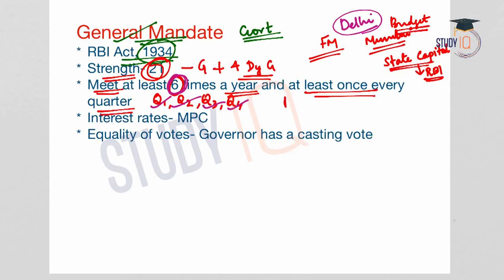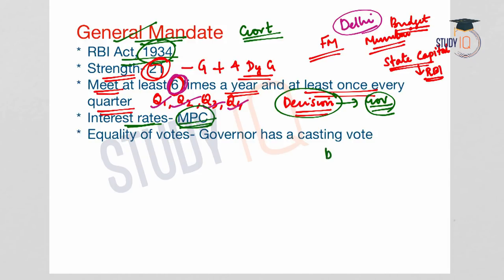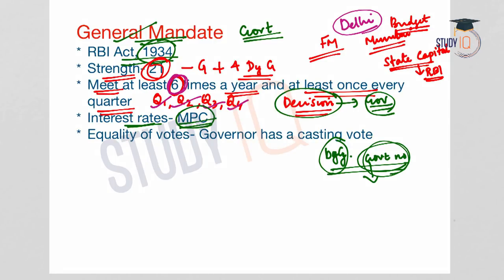Regarding decision-making in the board: the Governor seeks the advice of the board before taking a decision, but ultimately it is the Governor's decision. With regard to interest rates, it is the Monetary Policy Committee which is the deciding authority. According to the RBI Act, the Deputy Governors and the government nominees can attend any or all meetings of the board, but they are not entitled to vote. In the event of equality of votes, the Governor has a casting vote — a second vote.